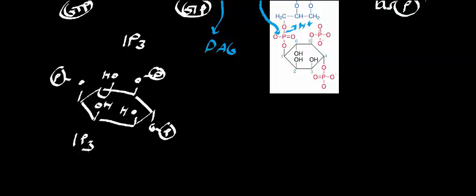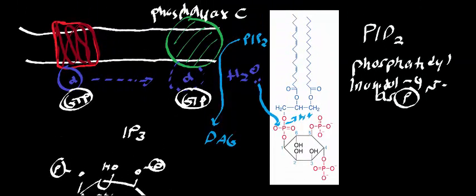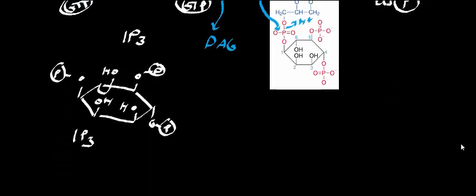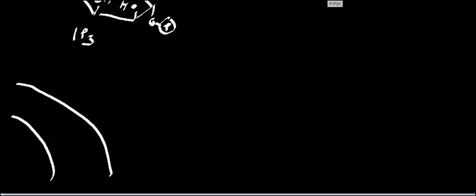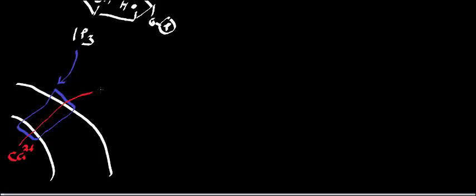IP3 has specific receptors on the endoplasmic reticulum. Here's my plasma membrane, and going deeper into the cell there's the endoplasmic reticulum membrane with receptors on it — specifically ionotropic receptors. IP3 binds to these receptors. Inside the ER there are lots of calcium ions, and when IP3 binds its ionotropic receptor, the channels open and calcium floods into the cytoplasm, causing a sharp rise in intracellular calcium ion concentration.